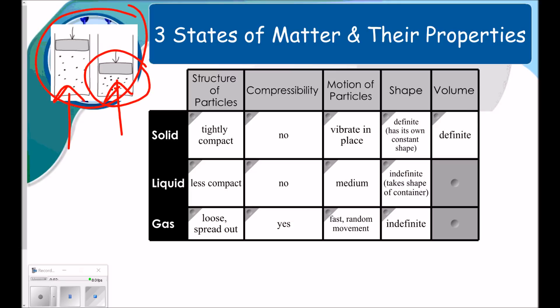For volume, solids have a definite volume, meaning that its volume is able to be measured. Liquids have a definite volume also. It can be measured. But gases have an indefinite volume. They spread out to fill its container.